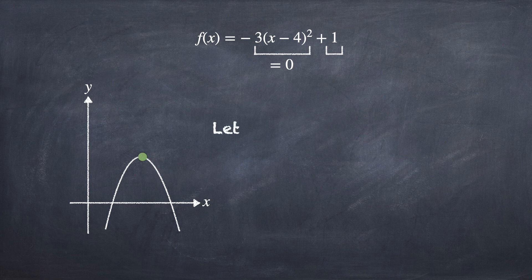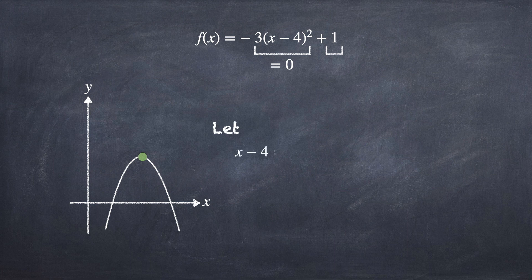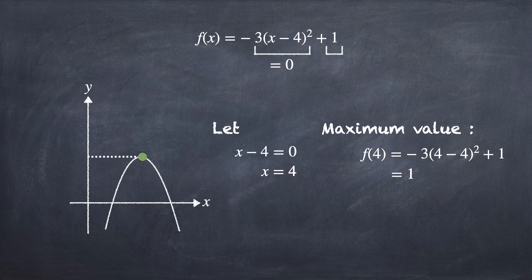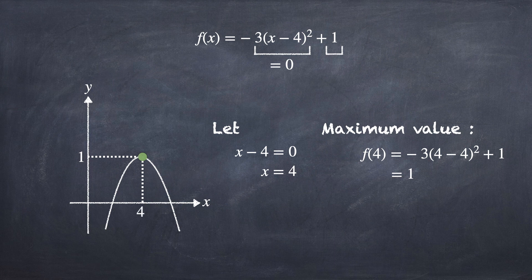Hence, we let x minus 4 equal to 0 and we obtain x equal to 4. Substituting x equal to 4 into the function and we will get 1. This means that the quadratic function will have a maximum value of 1 when x is equal to 4.